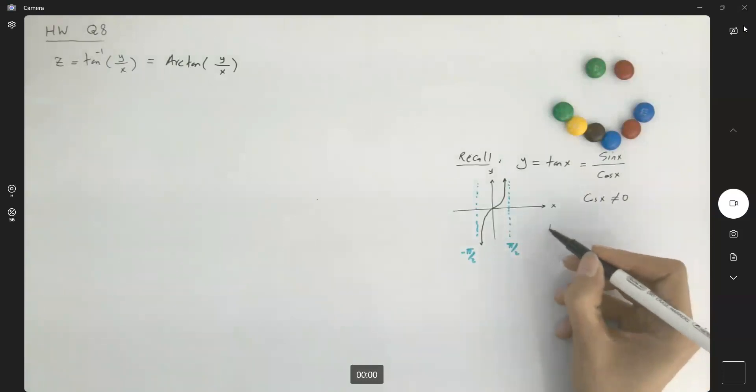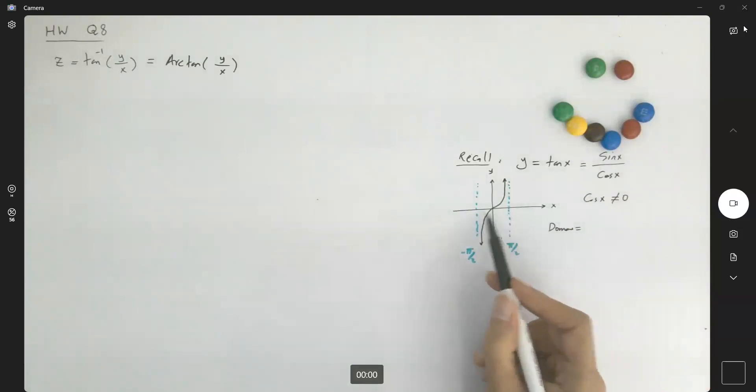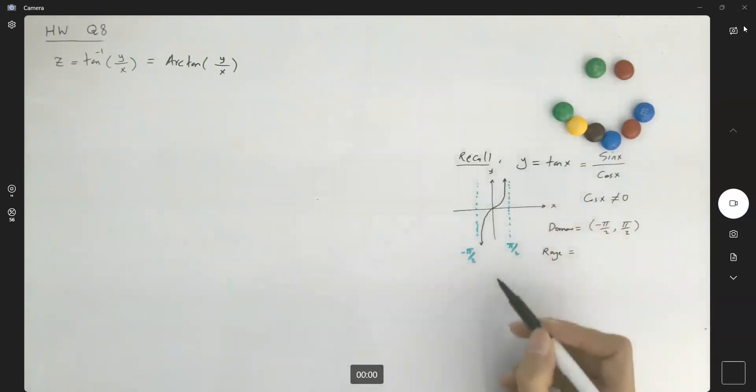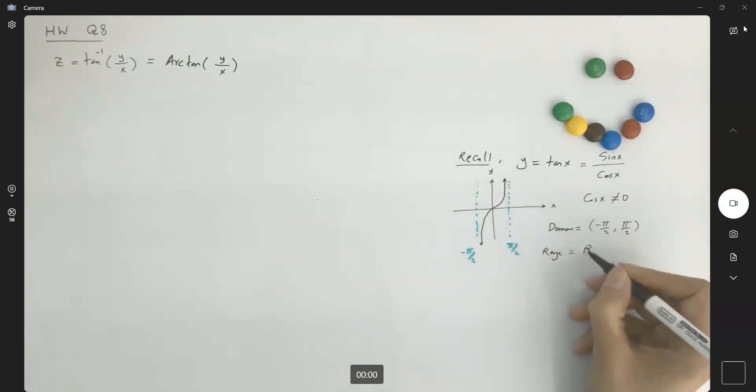What was the domain of the function on one interval? The domain is bounded between negative pi over 2 and pi over 2. What about the range? We don't have any issue with the range. The output values can take on any numbers on the vertical line, which is just r, negative infinity to positive infinity.